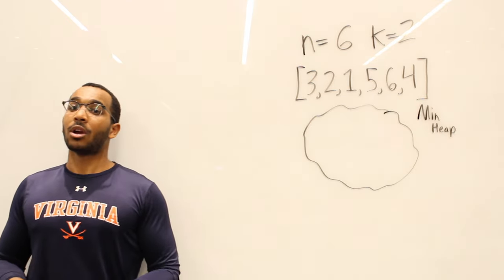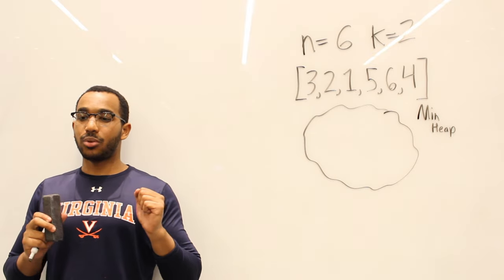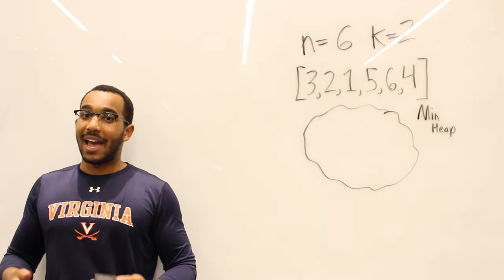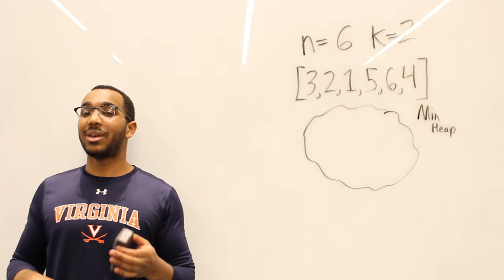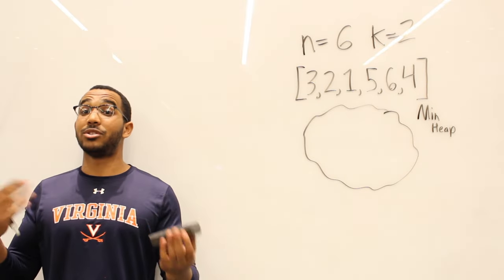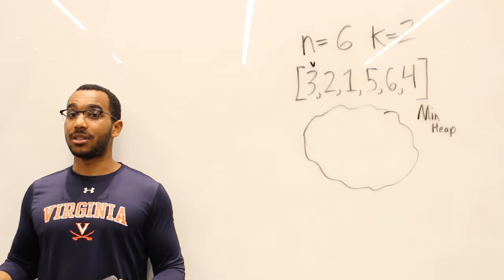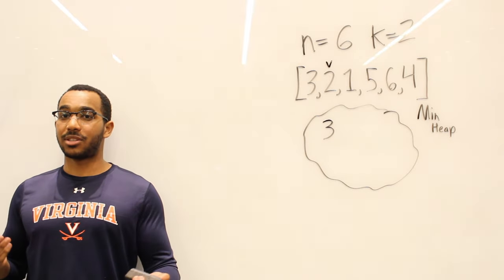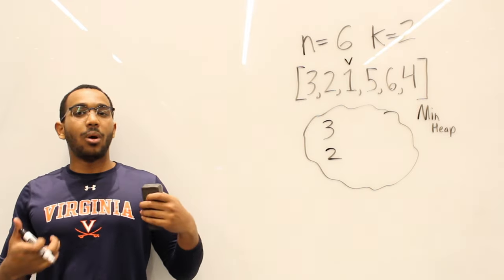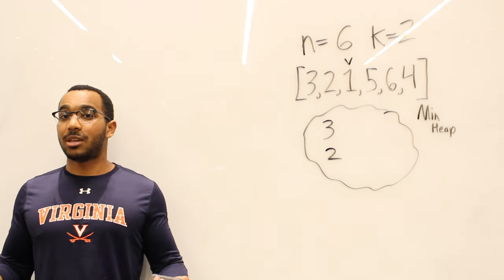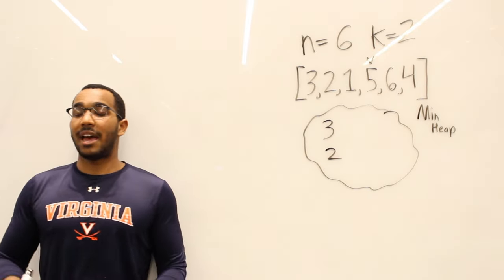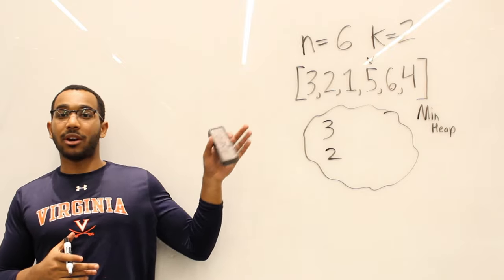We want the largest, so we go with a min heap. What we're going to do is iterate through the array, slowly going through it, adding each item. When we have more than k items, we eject the item we don't want. We add the first item, then the next — we still haven't hit capacity k, which is two. Then we reach the one, add it, and eject the smallest item since we're over capacity. So one gets ejected.